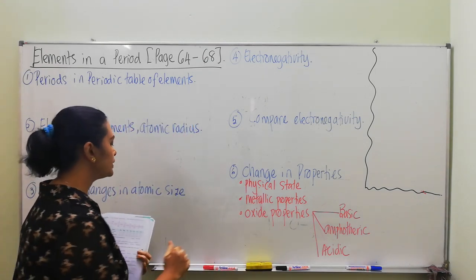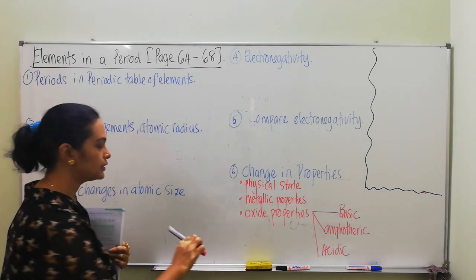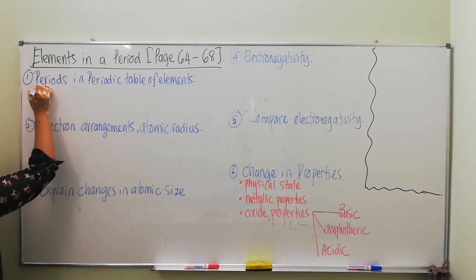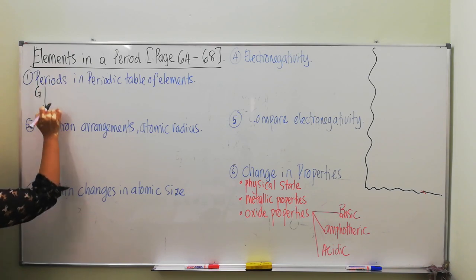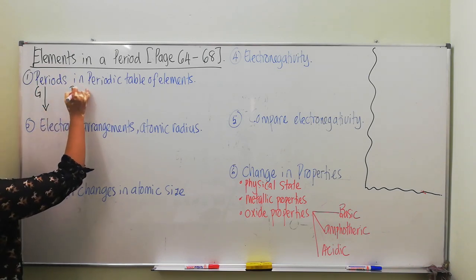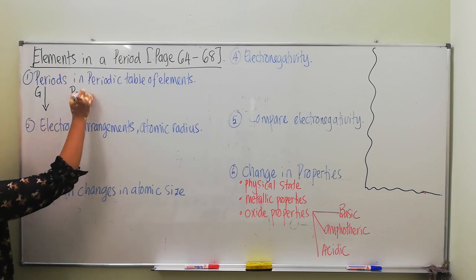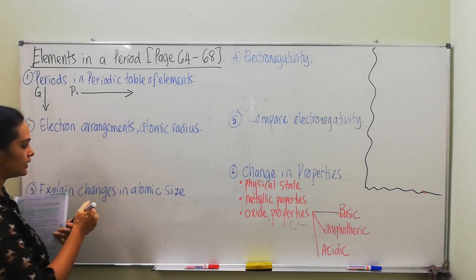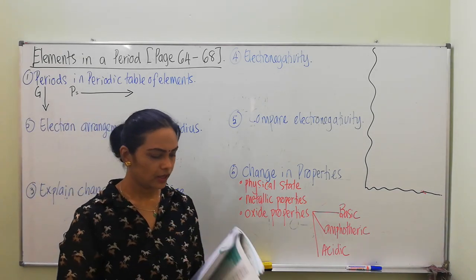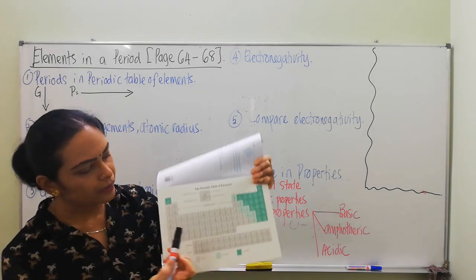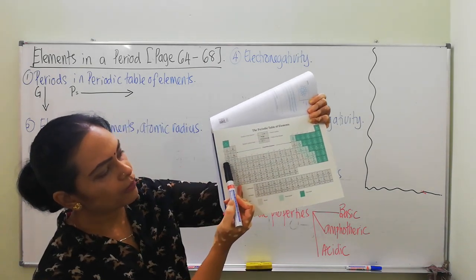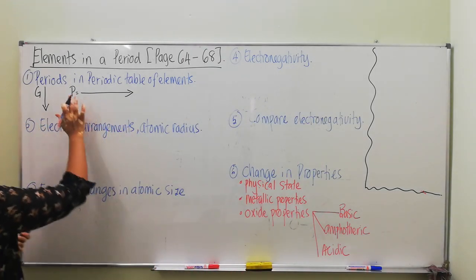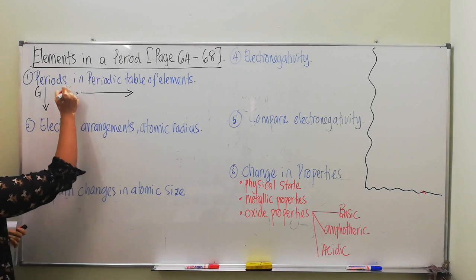What do you mean by period? As we were discussing the introduction of the periodic table of elements, teacher was talking about groups, which you read from top to bottom vertically. Now we are going to read periods. Period is read from left to right — elements in a period are read from left to right. For your syllabus, teacher will be discussing elements in period 3.